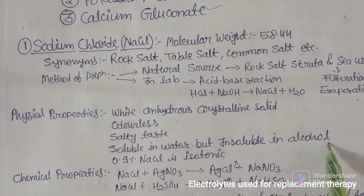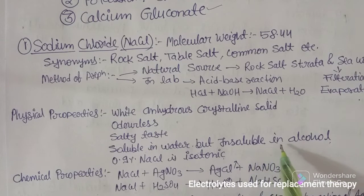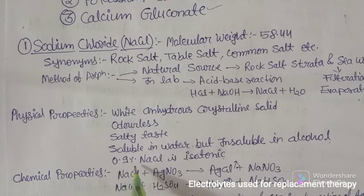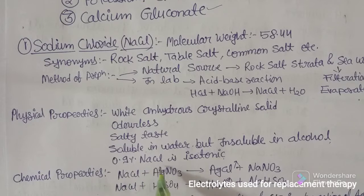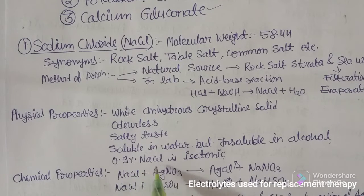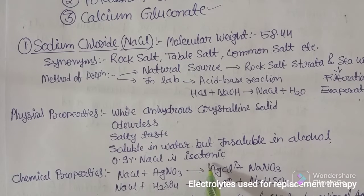0.9 percent of sodium chloride is isotonic — that is very important. As we have discussed earlier, 0.9 percent sodium chloride solution is isotonic, which means it has the same osmotic pressure as blood, making it compatible with blood.